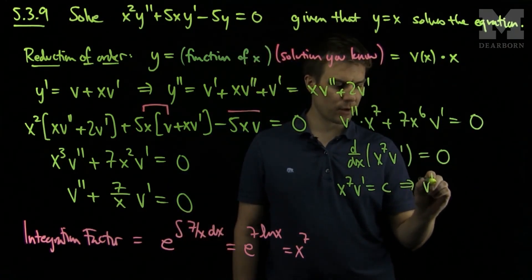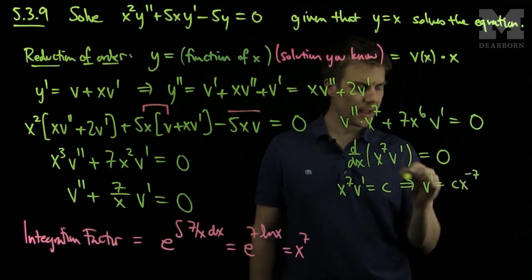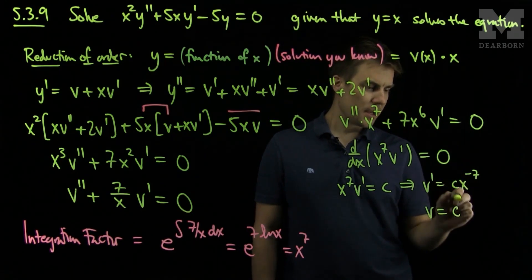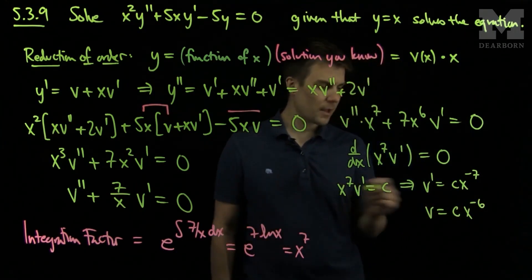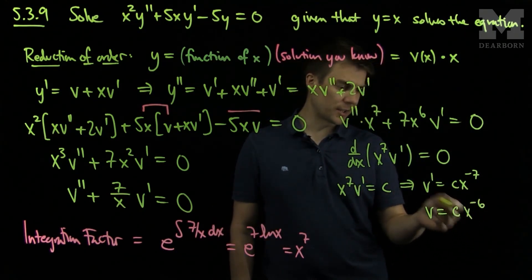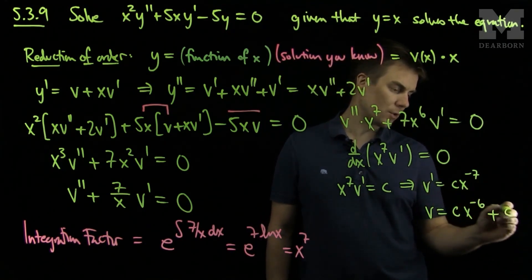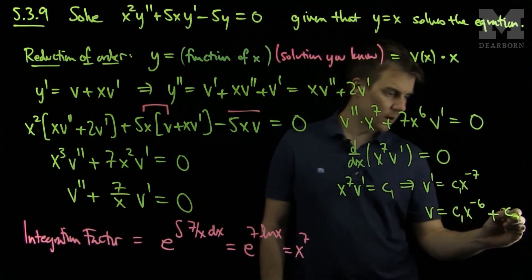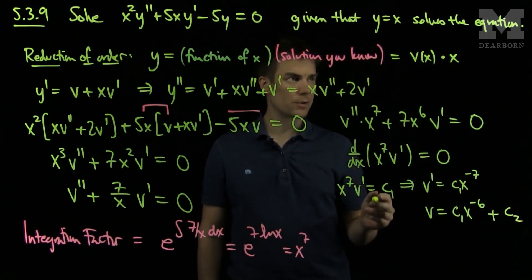That tells us that x to the 7th times v prime is a constant, since the derivative of something being zero implies that something is a constant. So v prime equals c times x to the negative 7. Integrating this, we get v equals c1 times x to the negative 6 (dividing by negative 6, absorbed into the constant) plus c2.